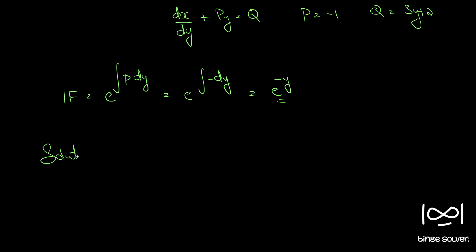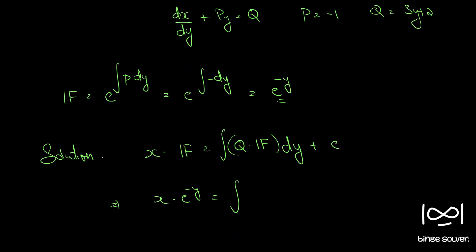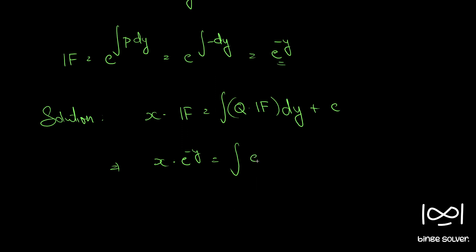The solution for such a linear differential equation is given by x times the integrating factor equals the integral of q times the integrating factor dy plus c. So x times e raised to minus y equals the integral of (3y plus 2) times e raised to minus y dy plus c.